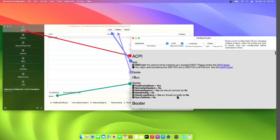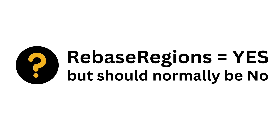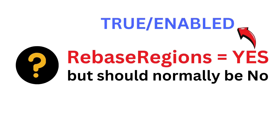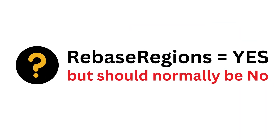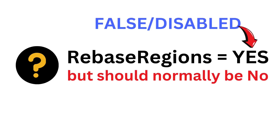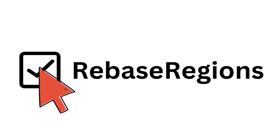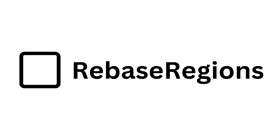I marked the sub-sections that you can refer to for where they are located. We will pay close attention to the ones with a yellow question mark — this means we need to adjust those settings in our config.plist. For example, Rebase Regions is equal to Yes, meaning our config has Rebase Regions enabled or set to True. The next line says it should normally be No, meaning we have to set it to False or Disabled. All you have to do is uncheck it to make it No or Disabled.